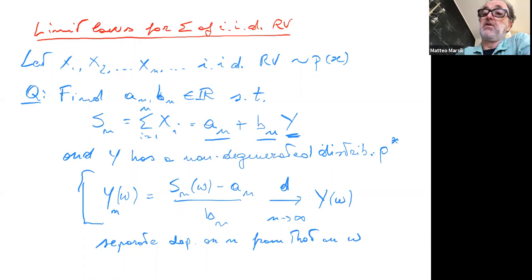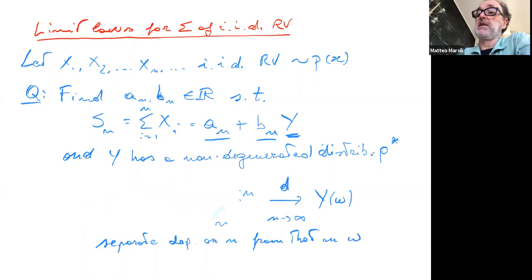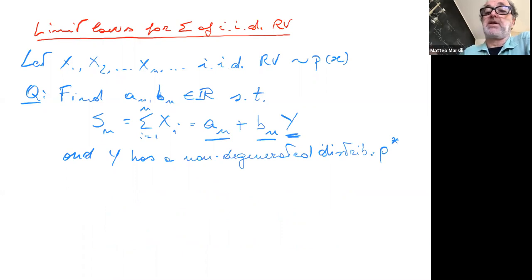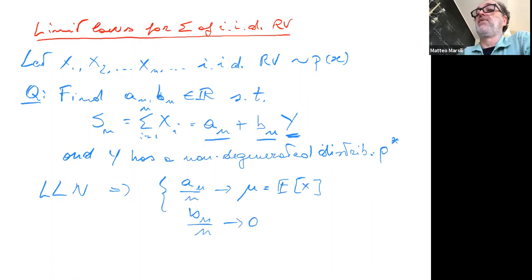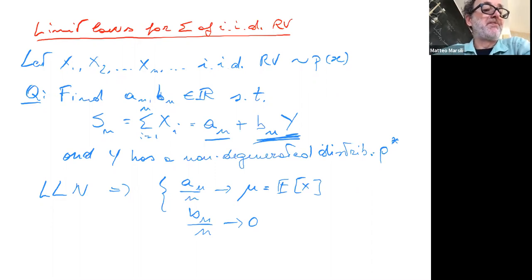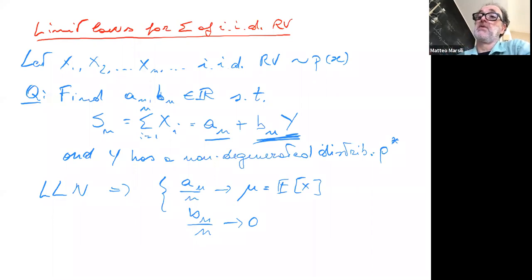The idea behind this equation is that we want to separate the dependence on n from that on omega — to explicitly understand how the sum depends on n through these two terms a_n and b_n, and how the fluctuations are distributed. We can go back to the law of large numbers and understand that two conditions should hold: a_n divided by n should converge to mu, and b_n divided by n should go to zero, so the second term vanishes.